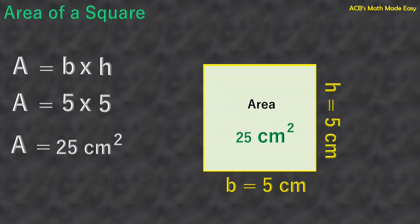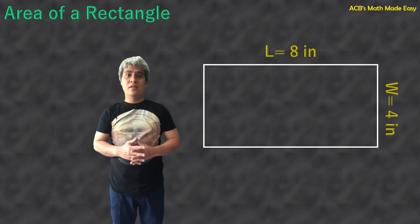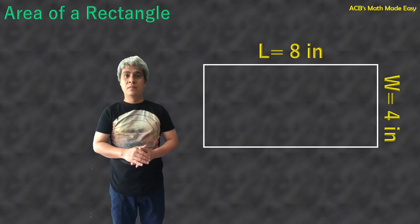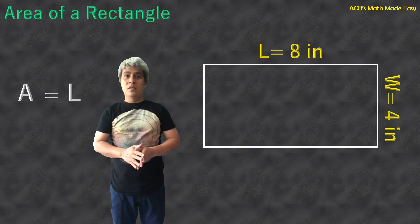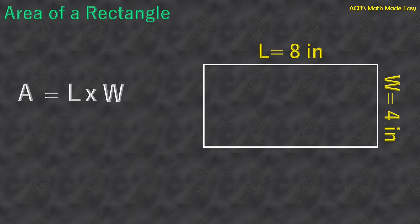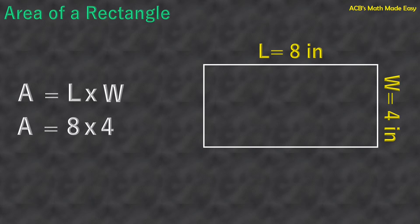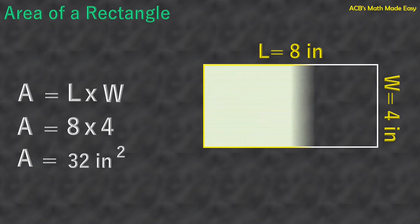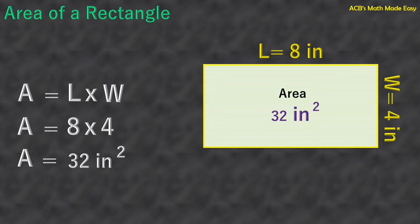We will try now the area of a rectangle. This is our rectangle. Its length is 8 inches and its width is 4 inches. The formula is the same as for the square: area of rectangle equals length times width. So the area equals 8 inches times 4 inches. Area equals 32 squared inches. This is the illustration of the area of the rectangle — 32 squared inches.